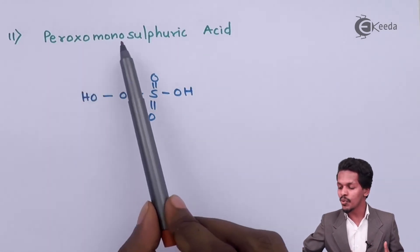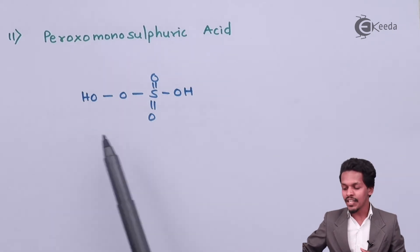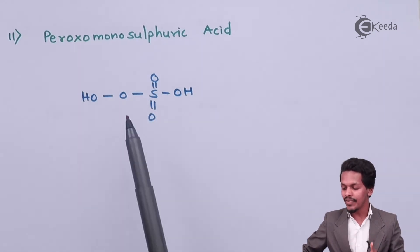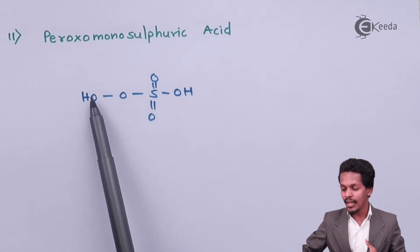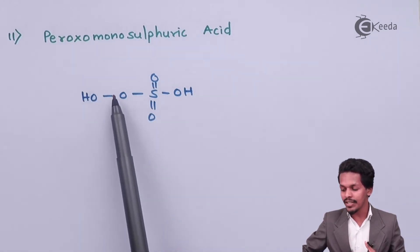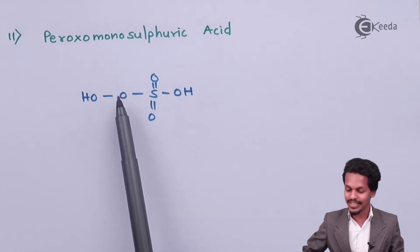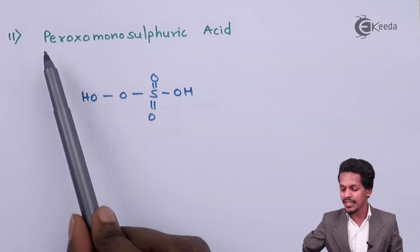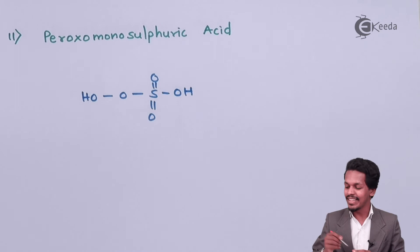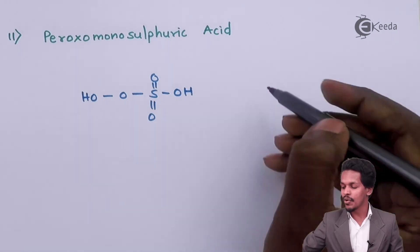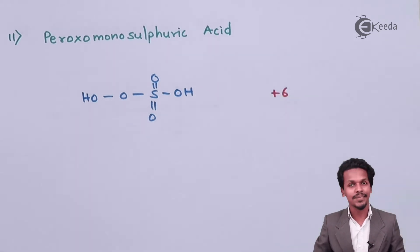Next is peroxomonosulphuric acid. This is like sulfuric acid, with the only difference being that instead of a simple OH group, there is an additional oxygen atom attached as well. The oxidation state of sulfur is plus 6.